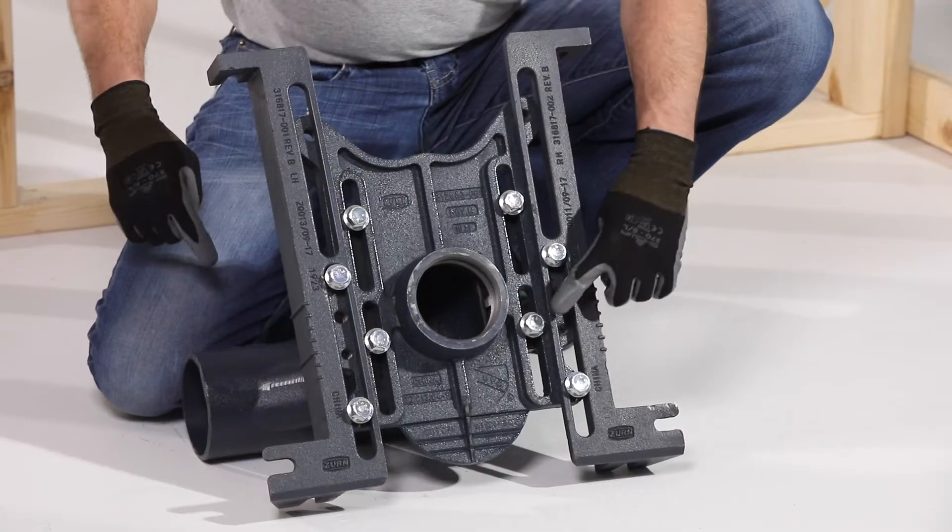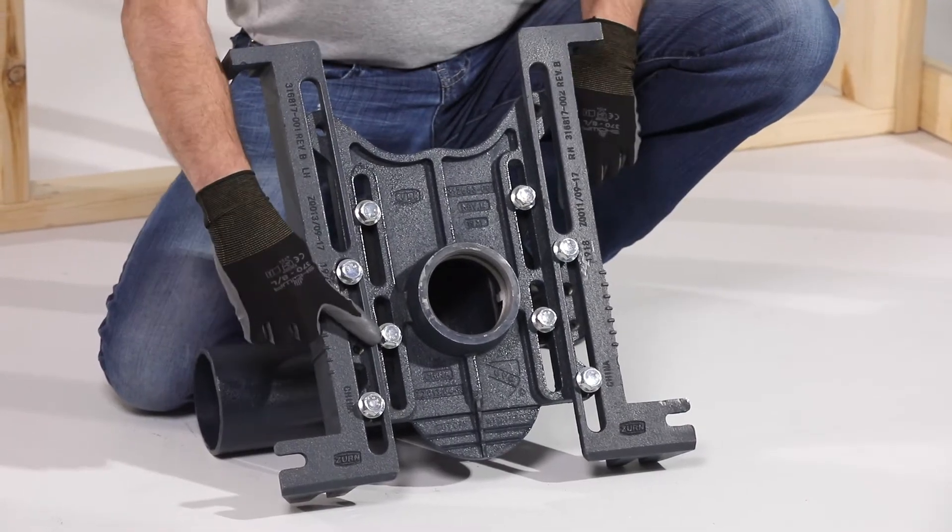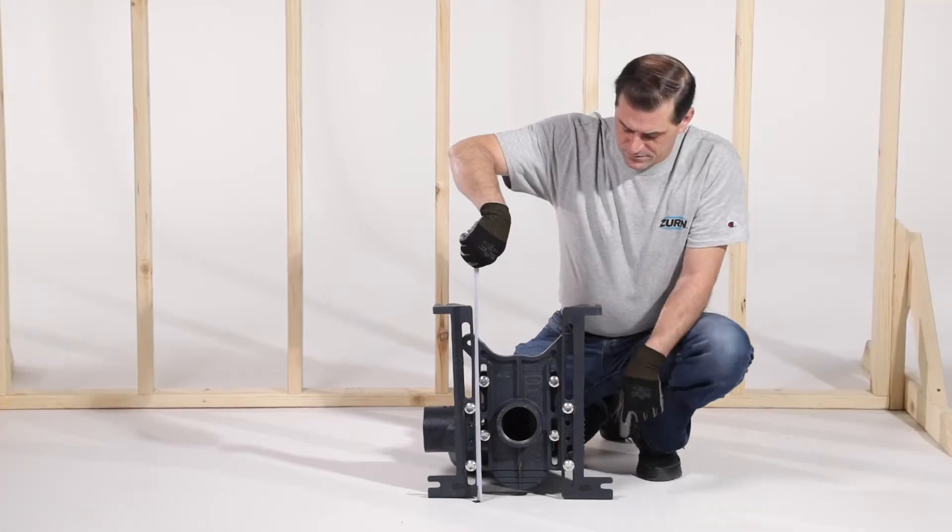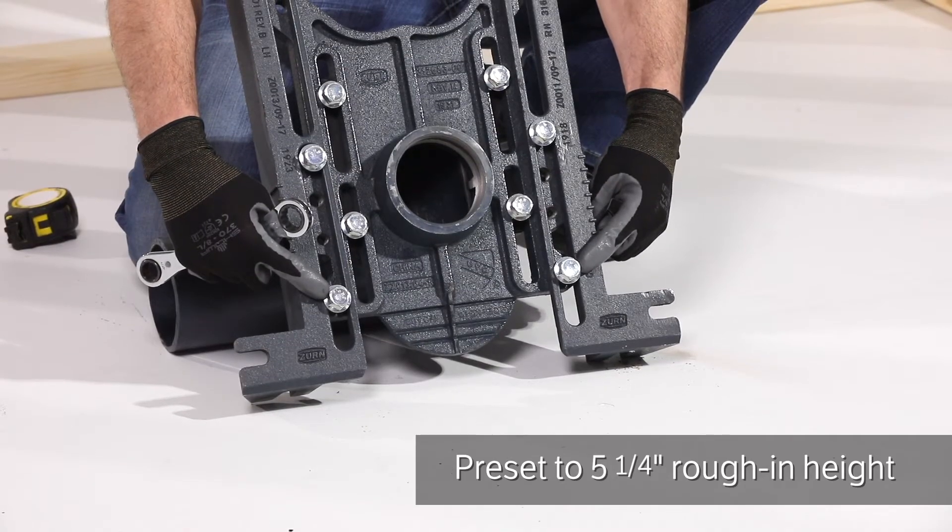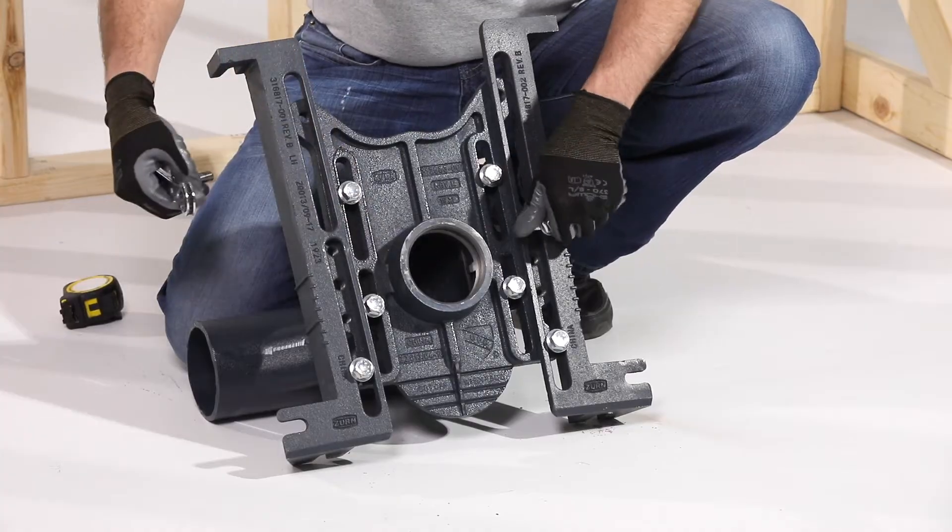Step two: adjust the height. The faceplate is preset to five and a quarter inches rough-in height. If you need to modify for ADA compliance, loosen the feet bolts and adjust the two top bolts to the desired height.